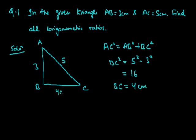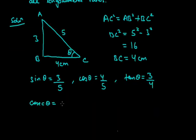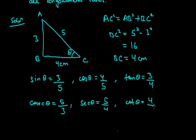We got the value of BC as 4 cm. Now for finding out all trigonometry ratios, suppose we have taken this angle as theta. So sin θ = perpendicular/hypotenuse = 3/5. Cos θ = base/hypotenuse = 4/5. Tan θ = perpendicular/base = 3/4. Cosec θ = reciprocal of sin θ = 5/3. Sec θ = reciprocal of cos θ = 5/4. And cot θ = reciprocal of tan θ = 4/3.